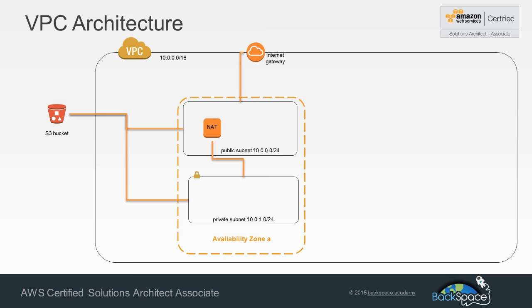The VPC wizard is going to create those public and private subnets. It will also create a NAT instance and an internet gateway for connection through to the internet. It will also create VPC endpoints for us to directly connect from our VPC to an S3 bucket without having to go through our internet gateway and back through to S3. This is a new feature of VPC and saves a little bit of time as well.